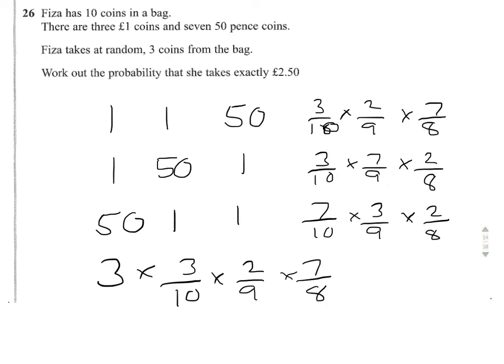So let's do some cancelling here, we've got our three threes, which will cancel with our nine, and our two will cancel into our eight, going four times. So we've got seven on the top, and we've got ten times four on the bottom, giving us an answer of seven fortieths.